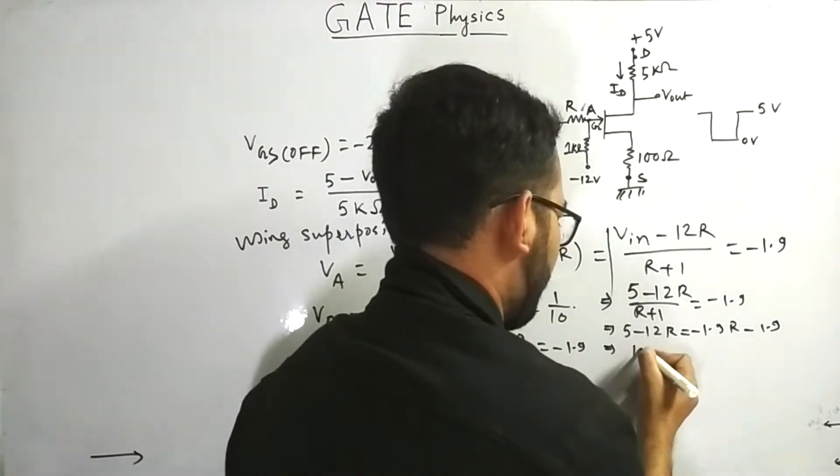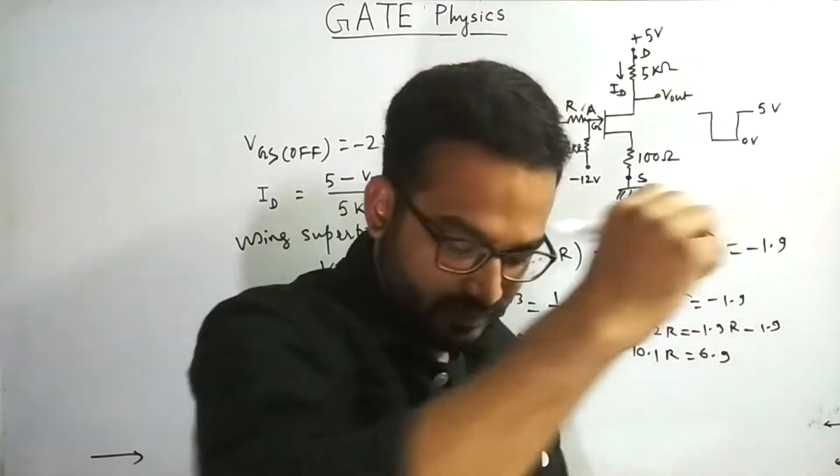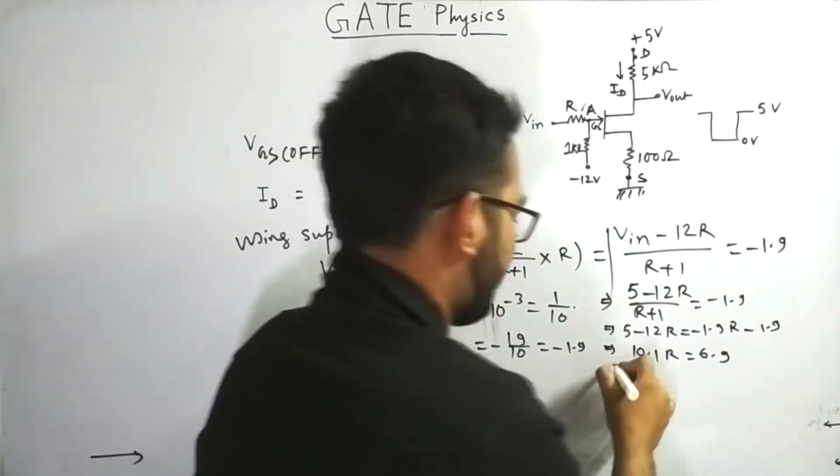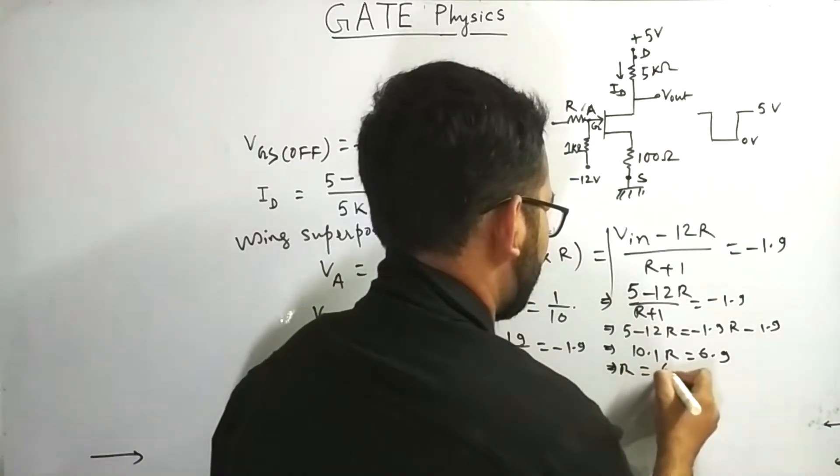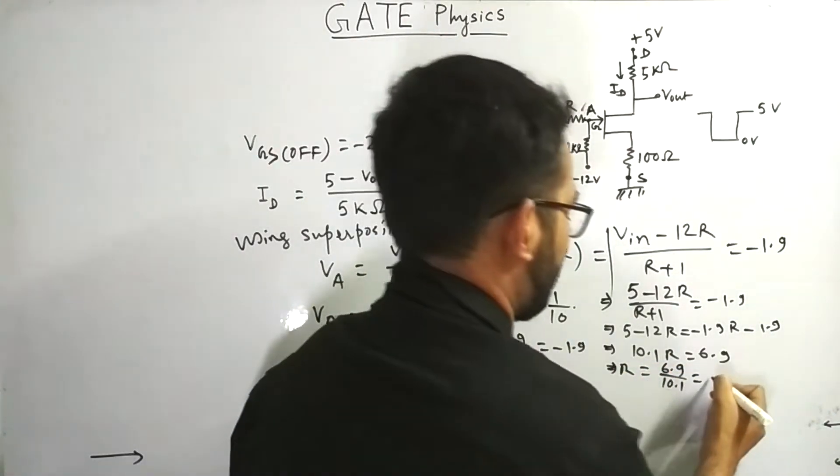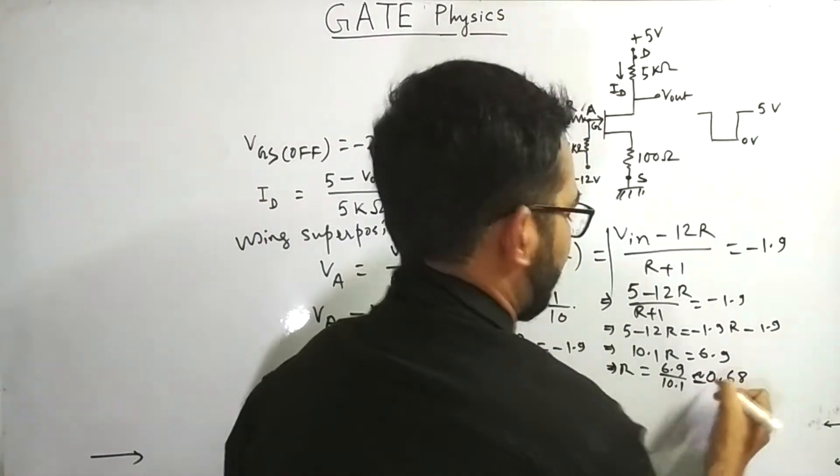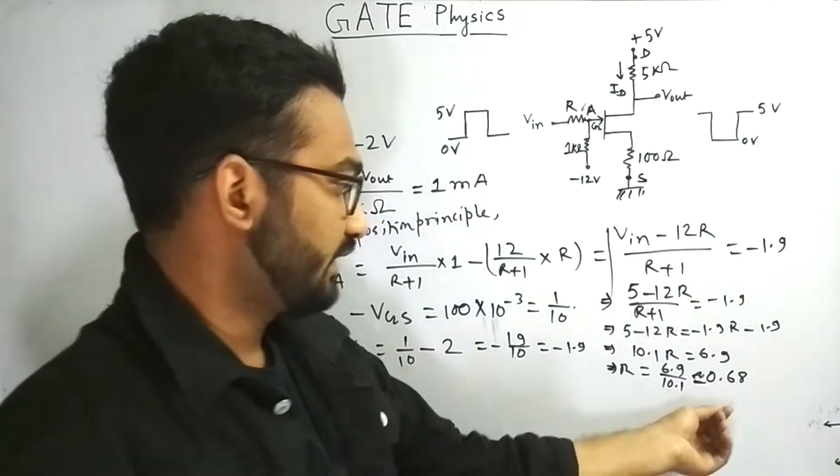Therefore, it will produce 10.1 R equals to 6.9. Therefore, R equals to 6.9 by 10.1. And it will produce 0.68 approximately.